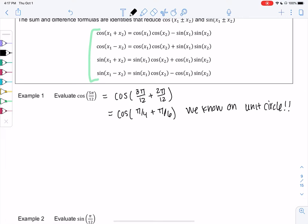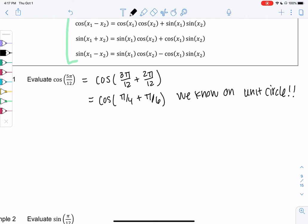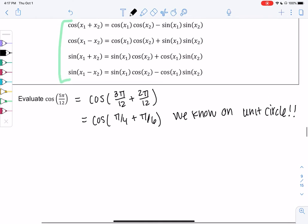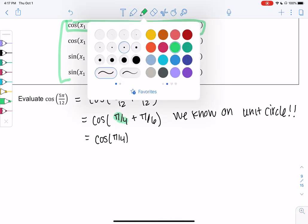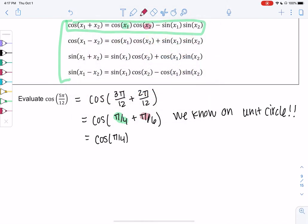So these identities are just going to allow us to find more angles than before. So I'm going to use the formula. This is the plus for cosine, so I'm going to use the first one. And then we'll find all these values. So it'll be cosine of pi over 4 times cosine of pi over 6 minus sine of pi over 4 sine of pi over 6.